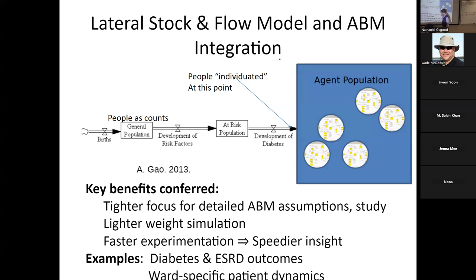What we're going to do is capture the general population at a count level — just counting the number of people in different categories, the number in a stock or subdivisions thereof. It's only once people reach a certain point that they become individuals. Up here they're just a number in a stock, but once they develop certain risk factors or have had certain health conditions develop, or have been involved in processes like contact tracing, suddenly they're a person — an individual followed after that as an individual.